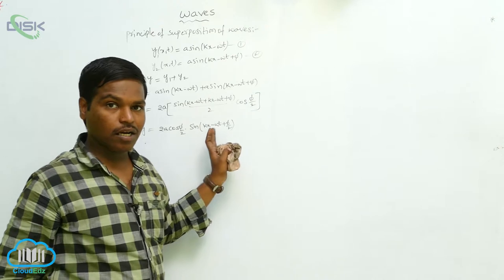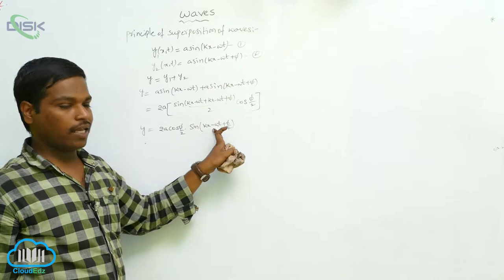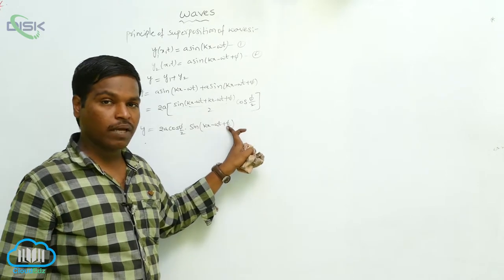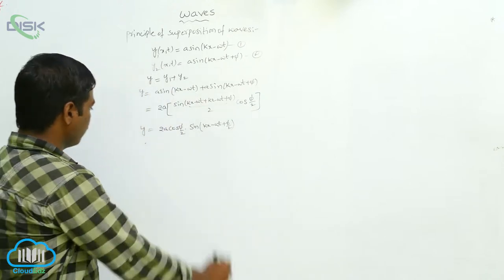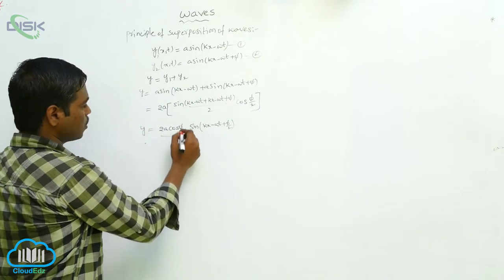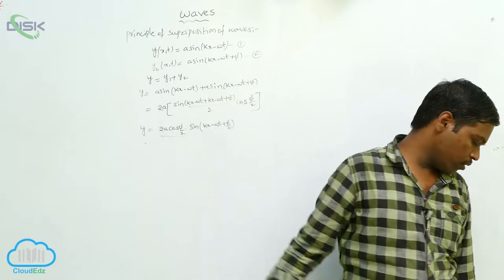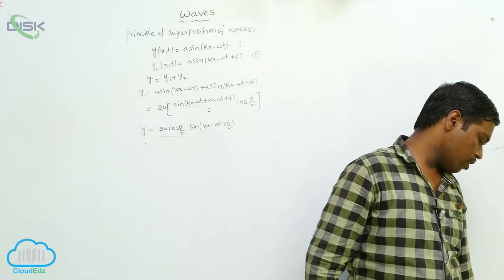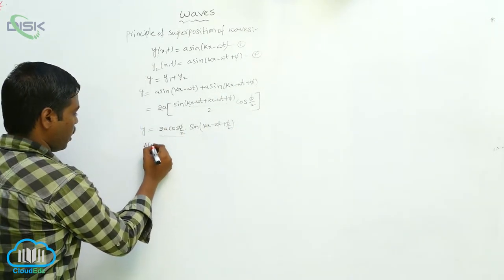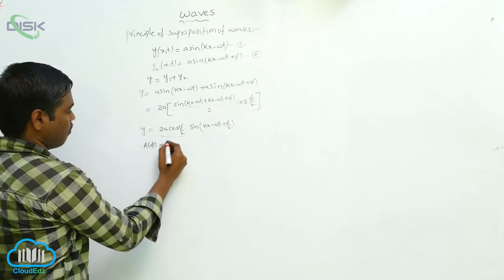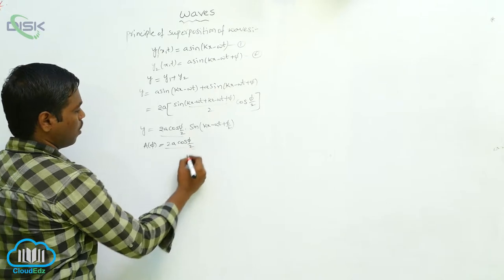The resultant displacement is y = 2A cos(φ/2) · sin(kx − ωt + φ/2). Here, 2A cos(φ/2) is the amplitude of the resultant wave. So the amplitude A(φ) = 2A cos(φ/2).